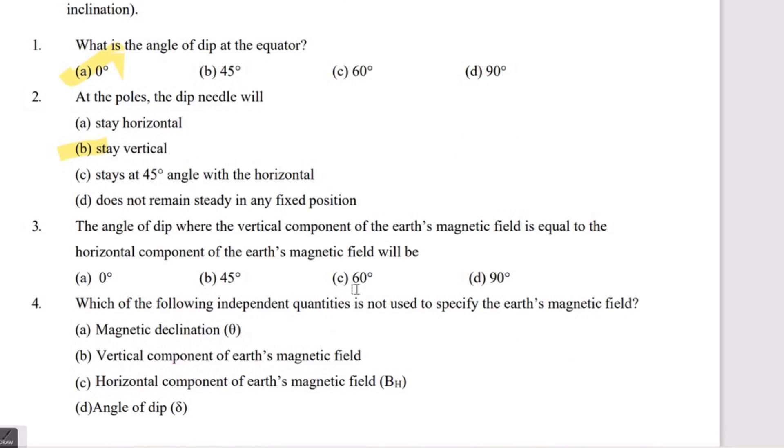So this is the correct answer. The angle of dip where the vertical component of Earth's magnetic field is equal to the horizontal component of Earth's magnetic field will be 45 degrees.